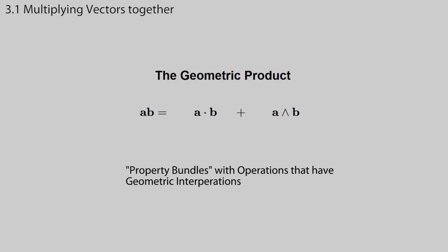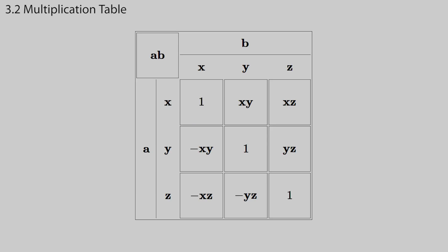The geometric product also gives these property bundles operations that can be applied to them. And these operations have geometric interpretations, for example, rotating and reflecting vectors. The multiplication table helps make this product more concrete. Let's see what happens if we take products of the basis vectors. For any basis vector, such as the x-axis, the result is 1. For any pair of basis vectors, such as the x and y-axis, the result is just the bivector they form together. This gives the following table. It's basically trivial, unlike the Quaternion table, for example.